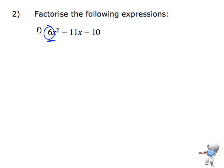So what I want to do first of all is, if I take my general equation ax squared plus bx plus c, I'm going to take the constant by itself, which is negative 10, and the coefficient of x squared, which is 6, and I'm going to multiply those together. And that's going to give me a value of negative 60.